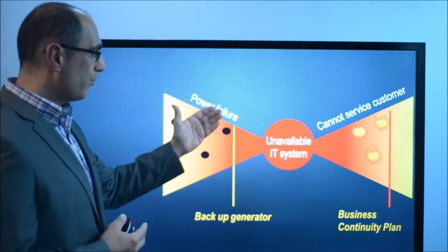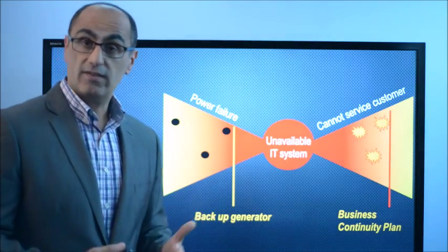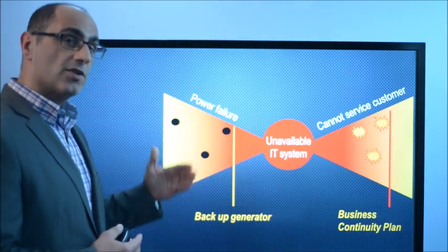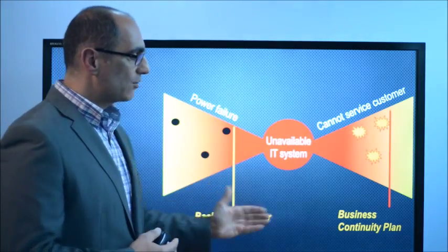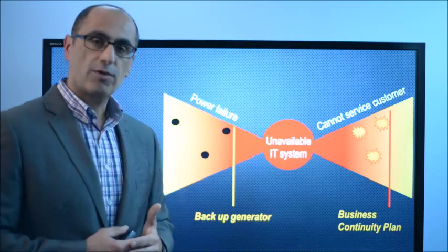So thinking through this risk a little bit more, what we can do is put in place some controls, such as a backup generator, to prevent this risk from occurring. And should this event take place, we can still have a business continuity plan that reduces the ultimate consequences of this risk.